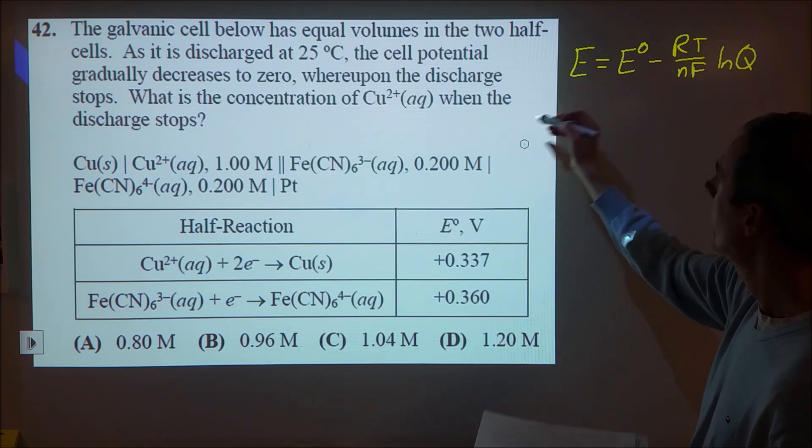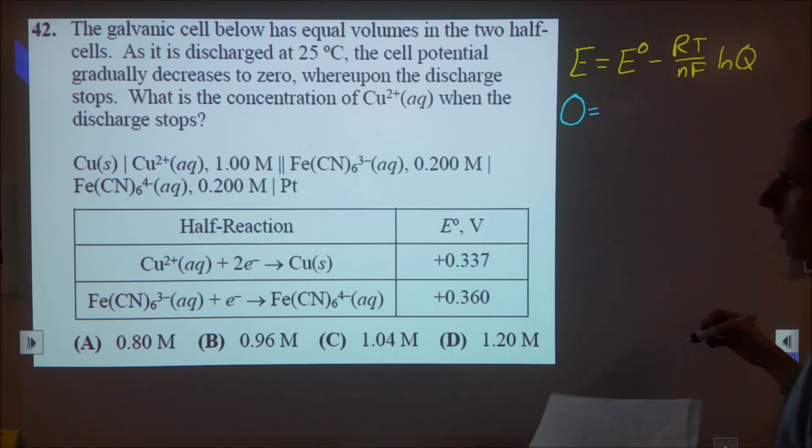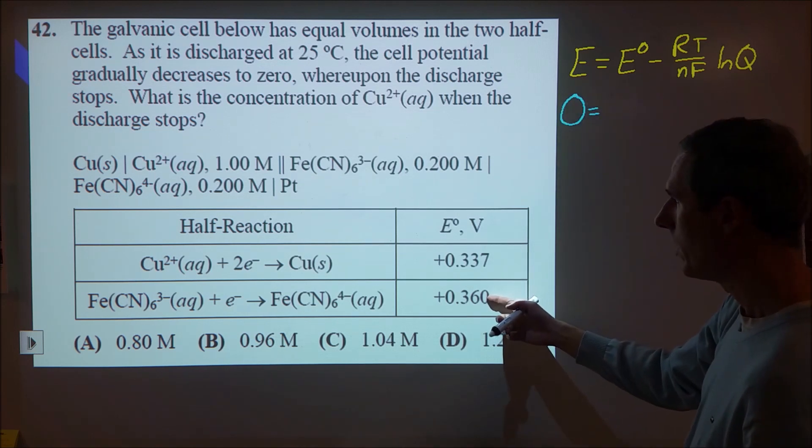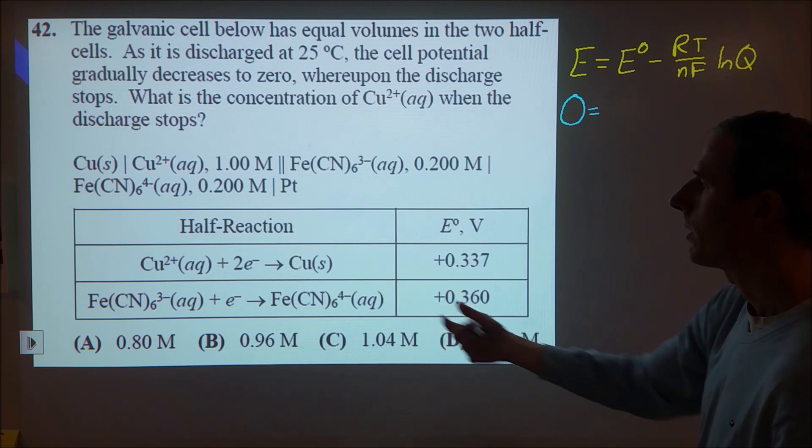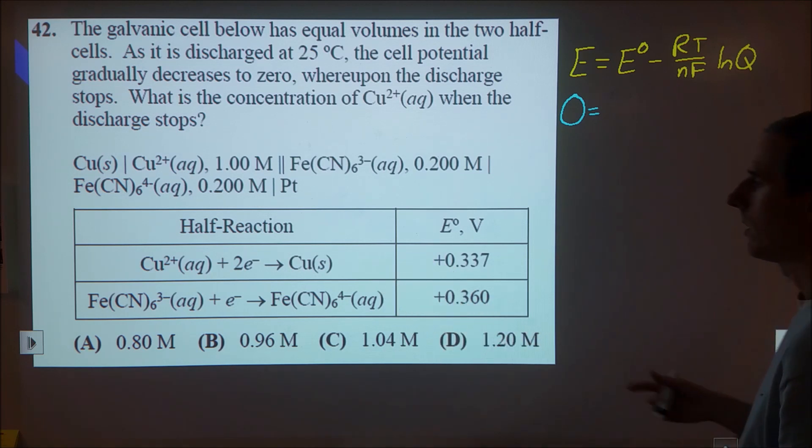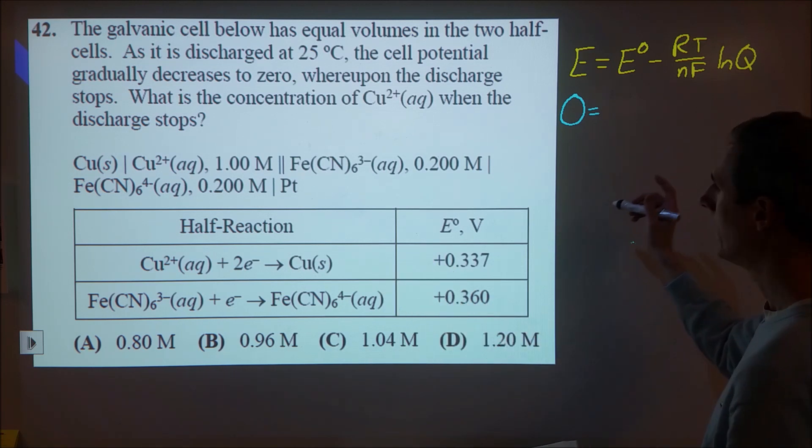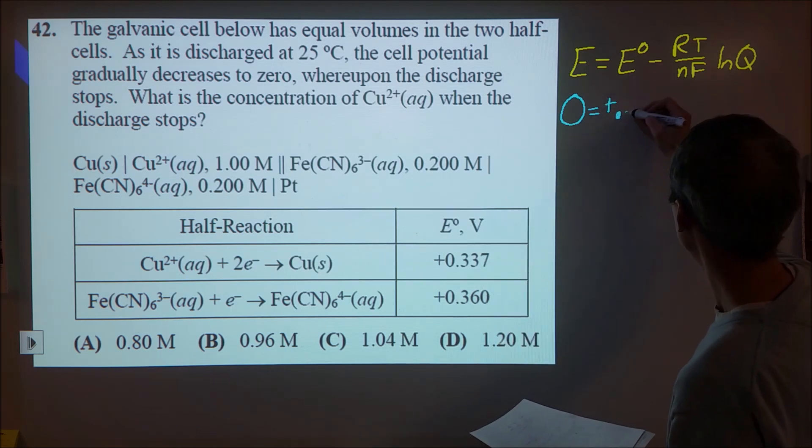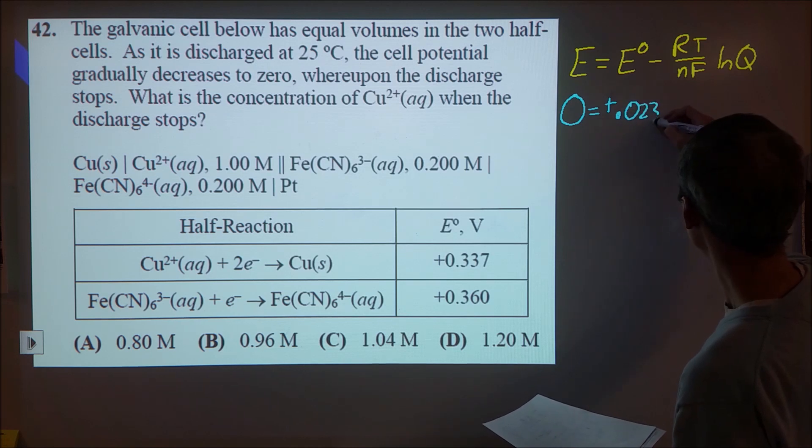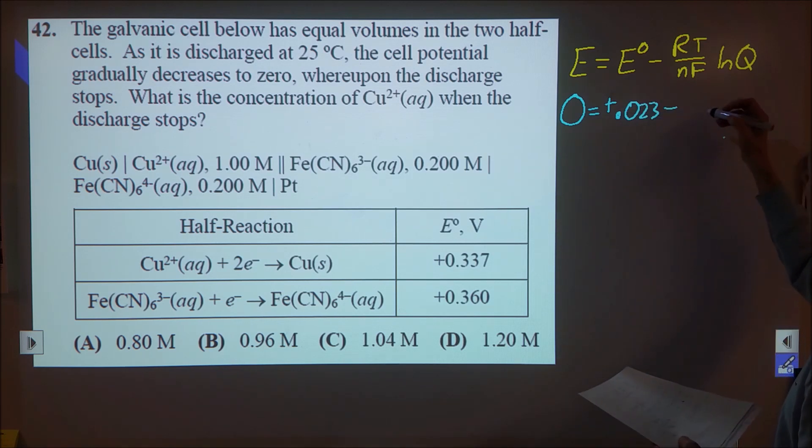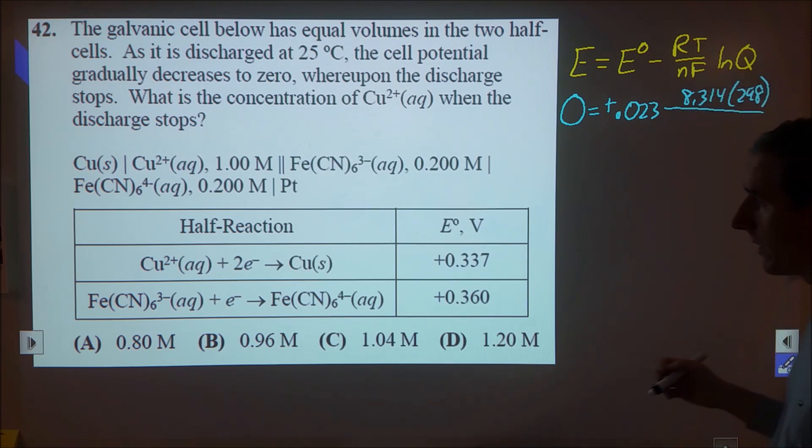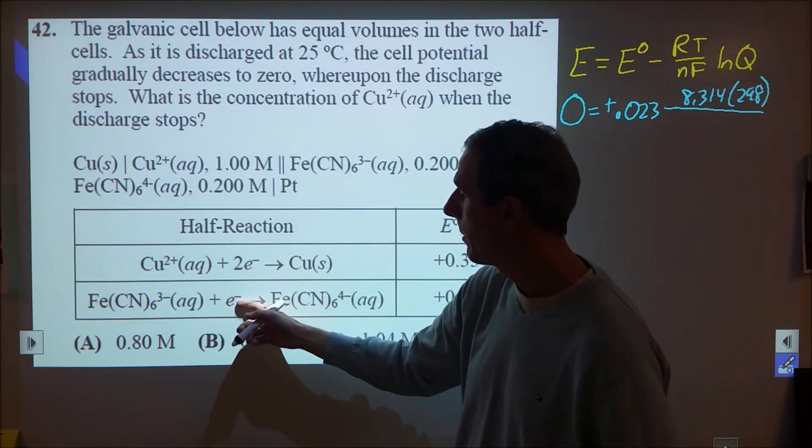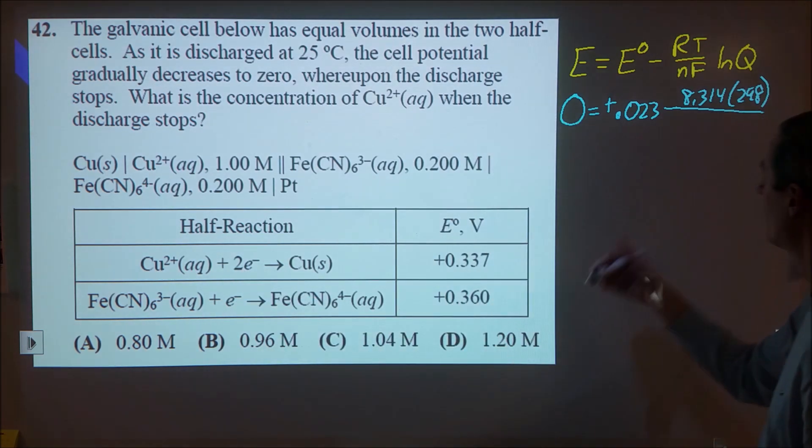So our battery is going to shut down when our voltage is equal to zero. Our initial voltage though is just going to be this minus this, so we're going to see the copper being oxidized and the ferrocyanide ferricyanide undergoing reduction. So if we take the difference in those, we're going to start with 0.023 volts. R we're going to use 8.314, temperature 298. The N we're going to have to do 2, and we're going to remember that we doubled this later, it's not going to affect the voltage.